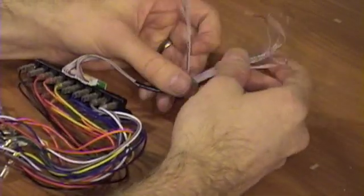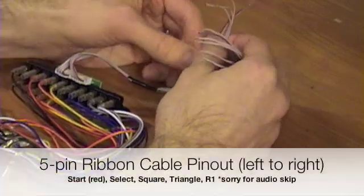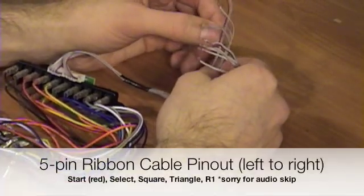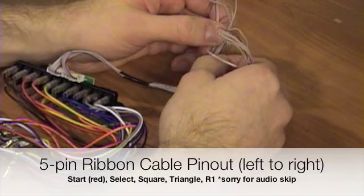One has five wires, and one has six. The one that has five, starting from red going from left to right, is start, select, square, triangle,